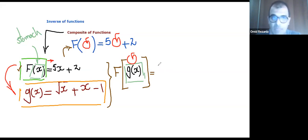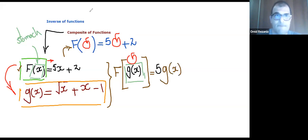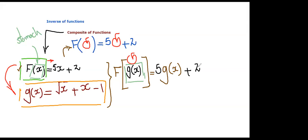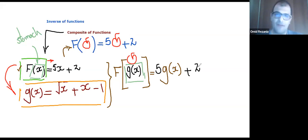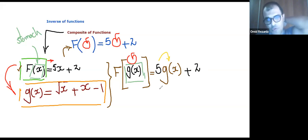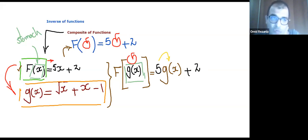It means that it becomes 5 times g(x) plus 2. Does it make sense to everyone? Yes. Fantastic. The question now is: you're telling me f of g(x) is going to be 5 times g(x) plus 2. But probably someone is going to ask why should I write g(x) mysteriously here, as long as I know what g(x) is?